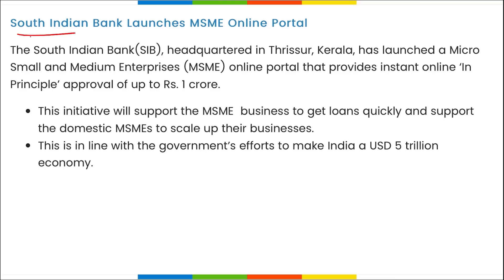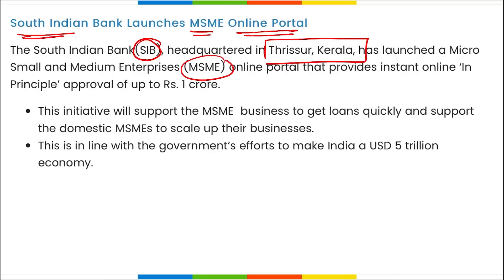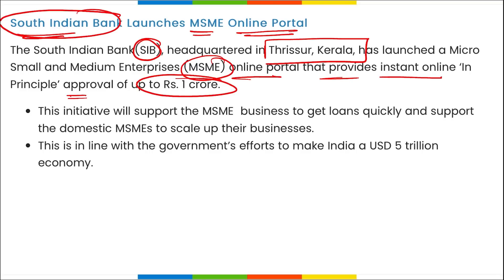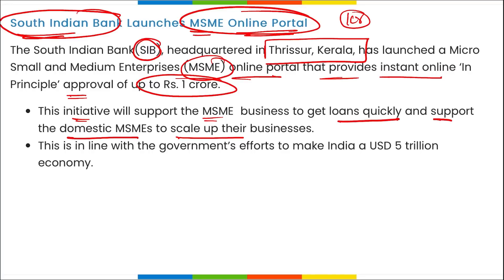South Indian Bank — headquartered in Thrissur, Kerala — has launched an MSME Online Portal that will provide instant online in-principal approval of up to one crore rupees. This initiative will support MSME businesses to get loans quickly and support domestic MSMEs in scaling up. This is in line with the government's effort to make India a 5 trillion dollar economy.